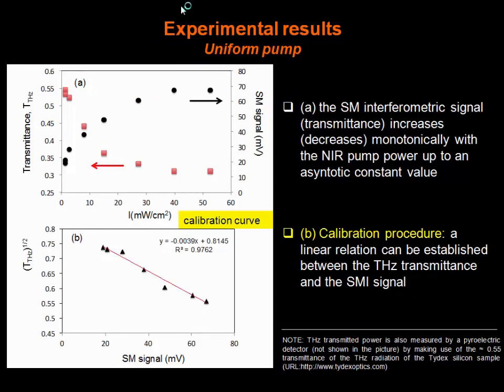These are the experimental results we obtained in the case of a uniform pump, with the spatial light modulator switched off. This shows the self-mixing signal variation with the pump power of the infrared laser, and the corresponding variation of the transmittance of the Terahertz beam measured by a pyroelectric detector behind the target. As the self-mixing signal increases, correspondingly the transmittance decreases toward a roughly constant value. From the experimental data, we derived a linear relation between the Terahertz transmittance and the self-mixing signal, which we used as a calibration curve to derive a direct relation between the carrier density variations on the semiconductor surface and the self-mixing signal.